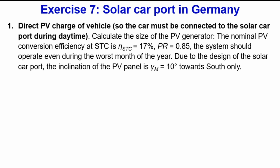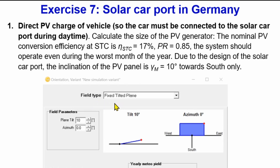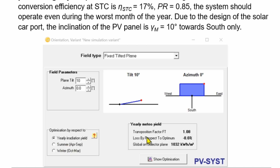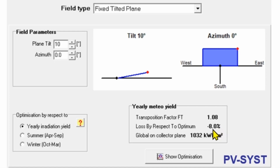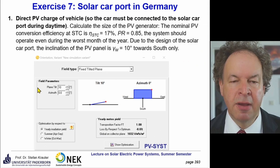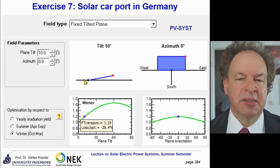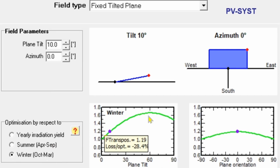In PVSYST, we select field type as fixed tilted plane. You can also choose tracking planes or bifacial panels, but here we use a fixed tilted plane with a tilt of 10 degrees (also called elevation angle), orientated towards south with azimuth zero. This gives yearly irradiance of 1032 kWh/m²/year — about 8% loss compared to optimum due to the very flat installation.